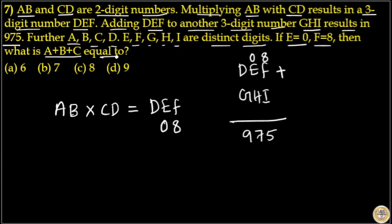All are different digits from one to nine. Eight plus seven is equal to 15, so I is equal to seven, with one carry over. That means one plus H is equal to seven, so H is equal to six. That means remaining is nine, and D plus G will give you nine.